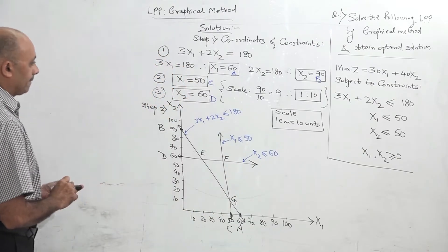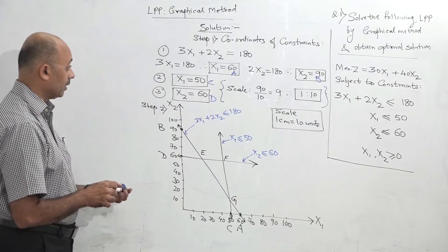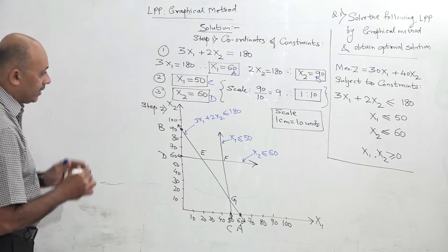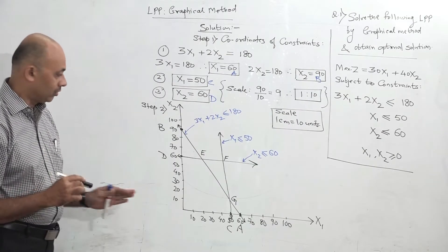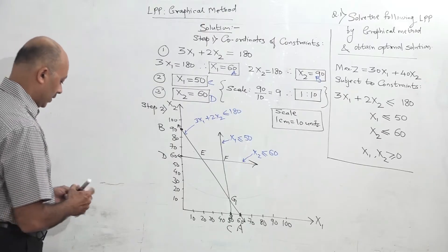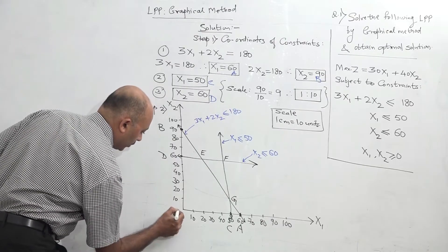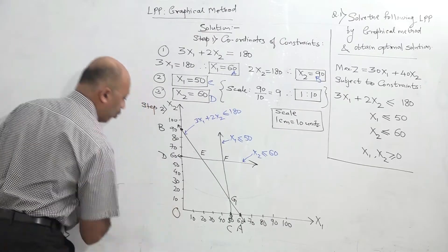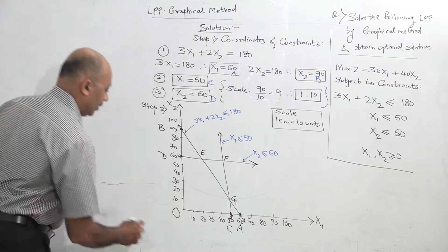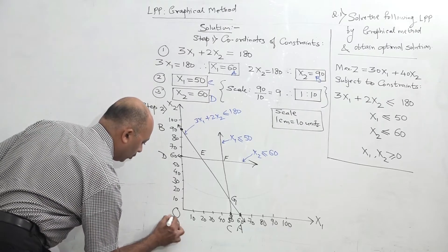Now three more points are there — let us say they are E, F, G. Now our graph is complete. The next step is to find the region of solution — where exactly is our solution on the graph? This is the origin of the graph — give it name O, O for origin — and the origin coordinates are always 0, 0.